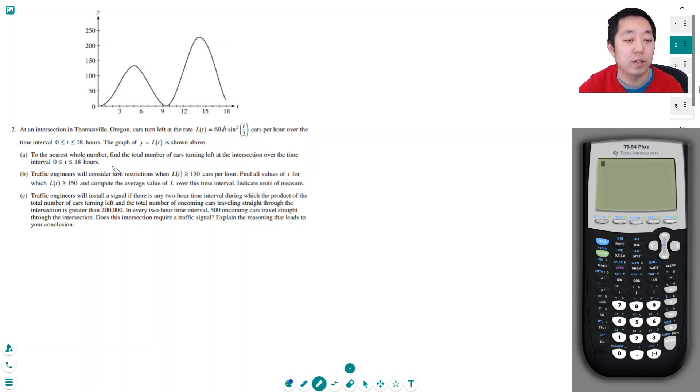To the nearest whole number, find the total number of cars turning left at the intersection over the time interval. This is the rate in cars per hour. To find the total number of cars turning left at the intersection, I want to find the area under this curve. If this is the rate, then to find the total amount I want to integrate this.